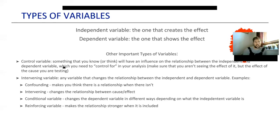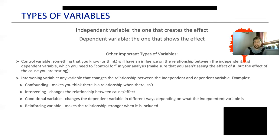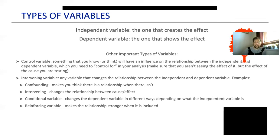If we talk about other types of variables: the control variable. A control variable is something you try to control for in your analysis, either the way you set up the data set or the way you analyze the data, because the control variable threatens the validity of what you're doing. In other words, it can give you false results.